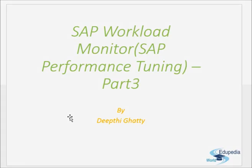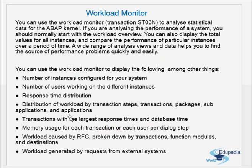Hello everyone, thank you for watching Edupedia World videos. This is Part 3 video on SAP Workload Monitor in the performance tuning chapter. You can use the Workload Monitor — the transaction code is ST03N — to analyze statistical data for the SAP ABAP system. When analyzing the performance of a system, you should normally start with the workload overview. This transaction is the first place to look.